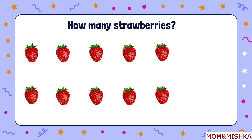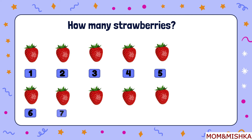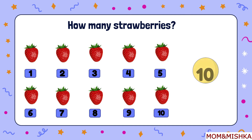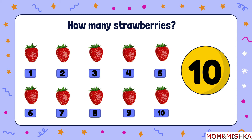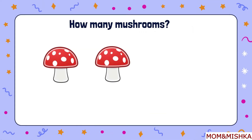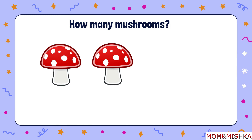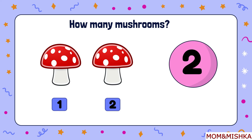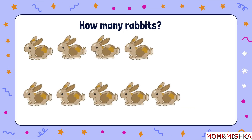How many strawberries? Let's count: one, two, three, four, five, six, seven, eight, nine, ten. There are total ten strawberries. How many mushrooms? One, two. There are two mushrooms. The last question — how many rabbits are there?